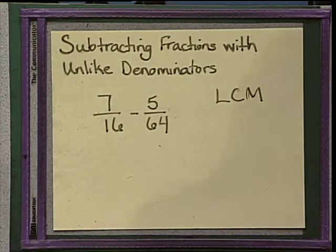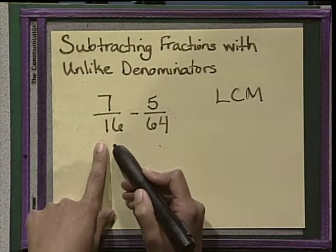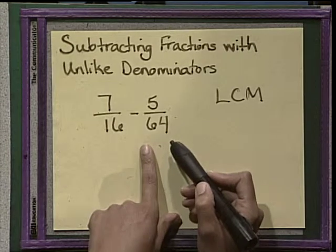We can do something called finding the least common multiple or the LCM. And this is something that you probably have learned in class. What you want to do is take the smaller denominator and try to find a common multiple up to 64, up to the larger one. In this case, it is 64.